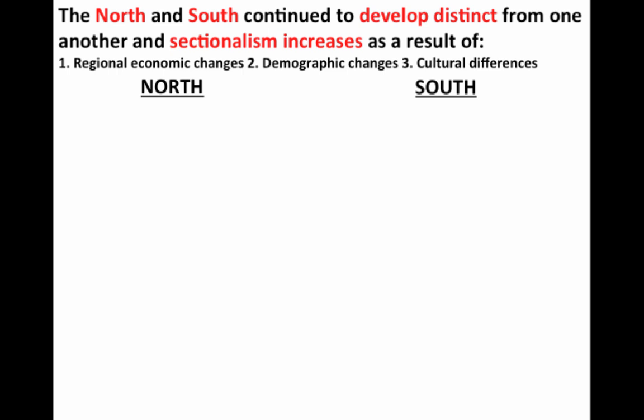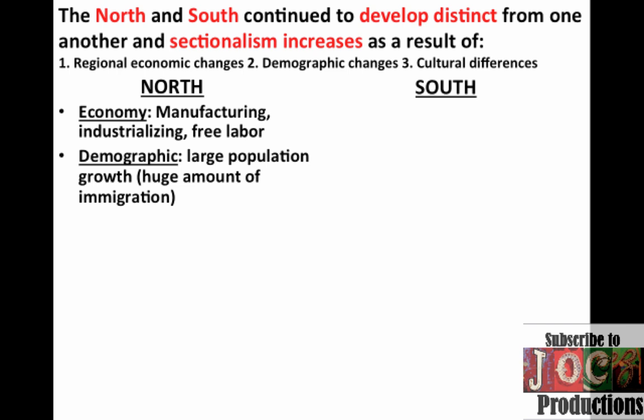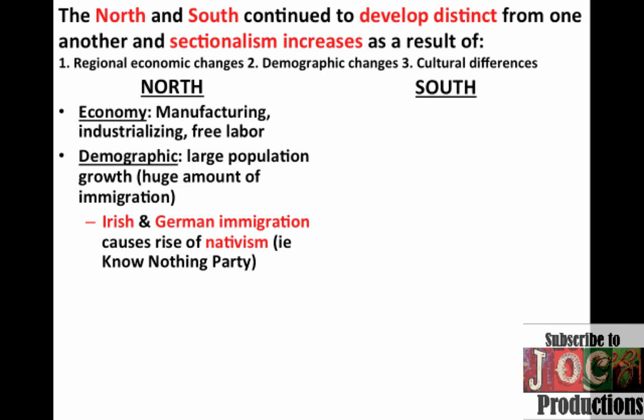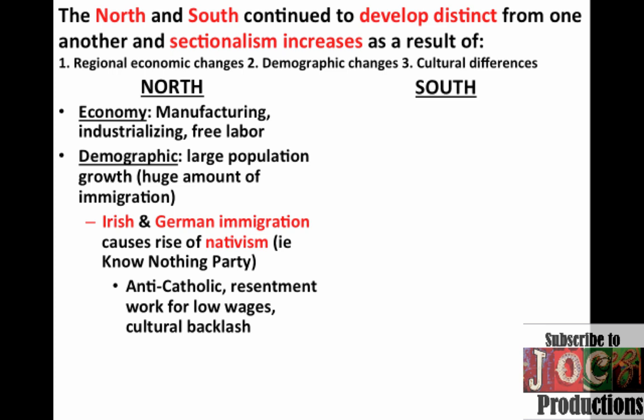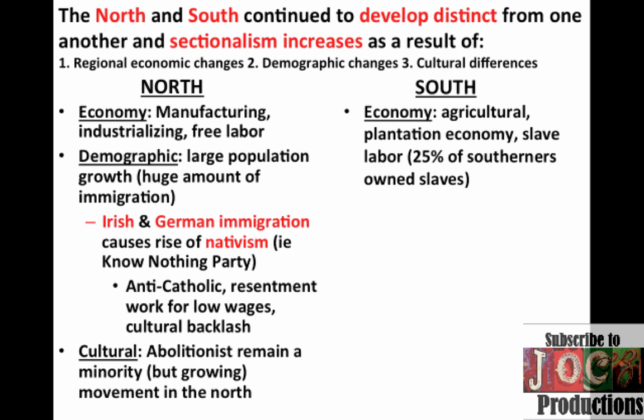You should keep in mind that the North and the South continued to develop distinct from one another, and sectionalism increased as a result of regional economic changes, demographic changes, and cultural differences. Economically, the North was industrializing based upon manufacturing and free labor. Their demographic reality was very different — they had large population growth and a huge amount of immigration, with Irish and German immigrants coming in as seen in Key Concept 5.1. There was a rise of nativism as seen in the Know-Nothing Party. Culturally, the North was different from the South. Abolitionists, although a small minority, were growing in the 1840s and 1850s. For Southerners, their economy was very different — it was based upon an agricultural plantation economy and slave labor.